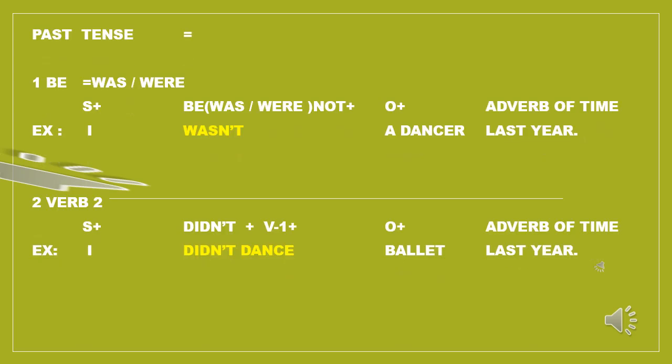Unit 7 is about past tense negative. The BE verb will be in the negative form, and the main verb will also be in the negative form.